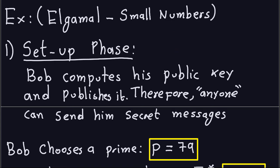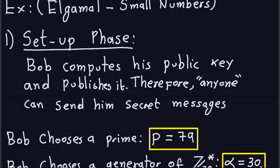So let's go into the first phase. Remember, we set it up in terms of phases. The first phase will be the setup phase, which is the one that Bob does. What Bob has to do is compute his public key and publish it, so anybody can send him messages.